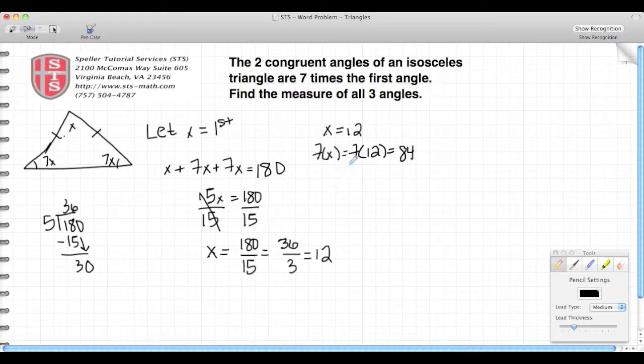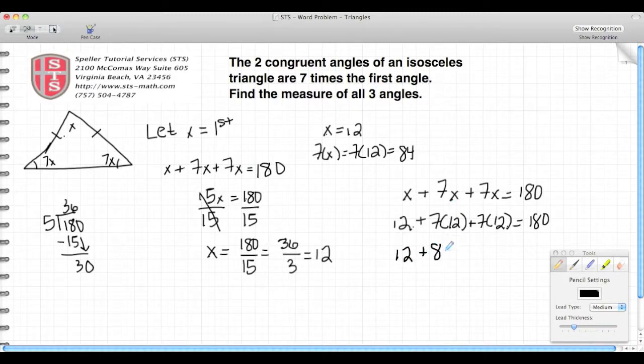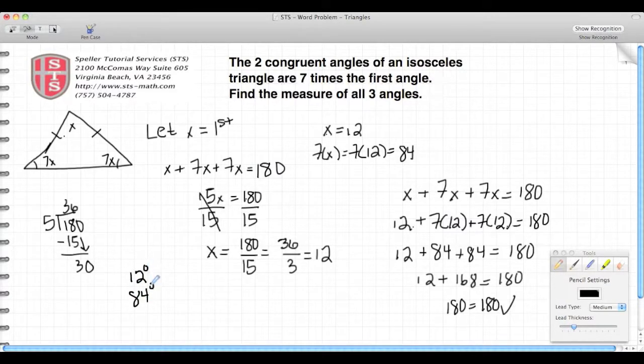Now I want to go back and check my work. Go back to the original equation, which is x plus 7x plus 7x equals 180. We said that x was 12, so I substitute that in for each x that I see. 7 times 12 is 84. 84 and 84 is 168. So I have 12 plus 168 equals 180. And I see that 12 plus 168 is 180. So I know that I'm correct. The first angle is 12, and the other two angles are 84 degrees.